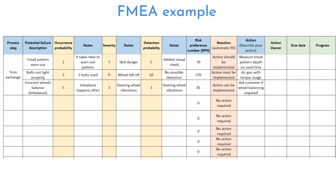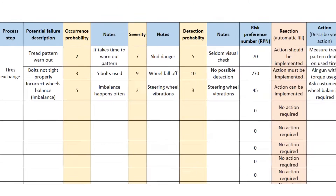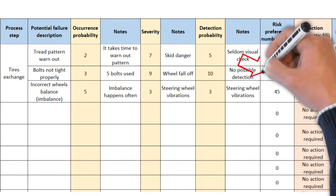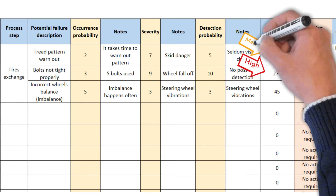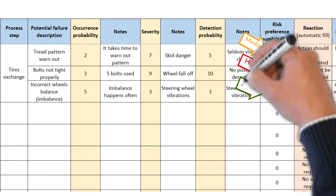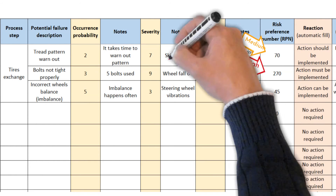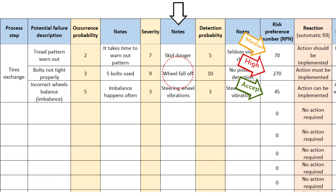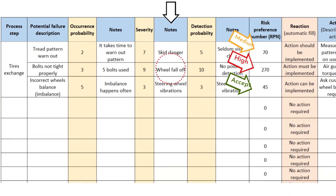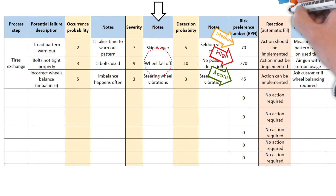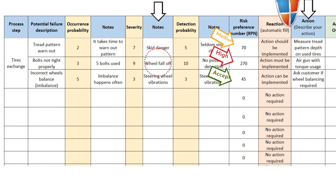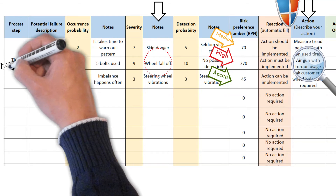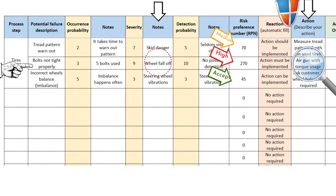Here is an FMEA example on tire exchange. Out of three potential failures, one has a higher RPN, one is medium, and one has an acceptable risk priority number. Do not hesitate to simply describe each potential failure. Actions, also called countermeasures, must be bulletproof to decrease risk to a minimum level — for example, torque airgun usage in the case of bolts not tightened properly.